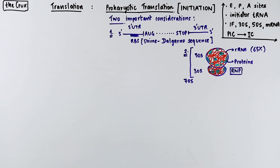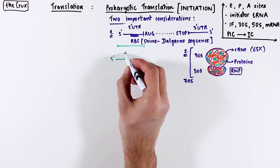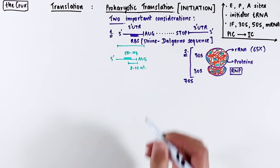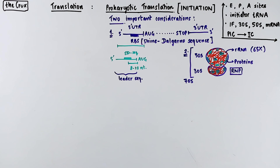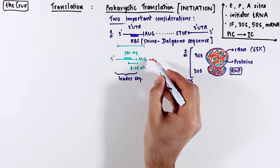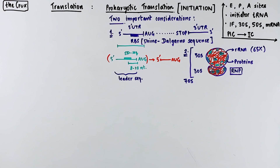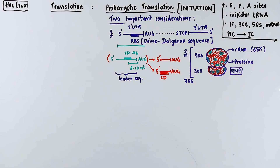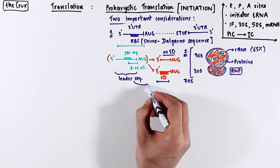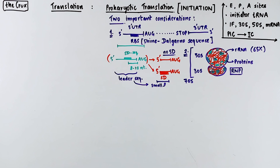In the 5' UTR, the Shine-Dalgarno sequence is about 10 nucleotides away from the start codon. This entire 5' UTR in prokaryotes is also called the leader sequence. This canonical mRNA 5' UTR can sometimes be different, such that the 5' UTR does not contain any ribosome binding site, or sometimes the 5' UTR is so small that it starts with the ribosome binding site itself. These no Shine-Dalgarno and small leader sequence mRNAs have a slightly different way of initiating translation. We'll primarily discuss the canonical mRNA syntax, which is most commonly found in prokaryotes.